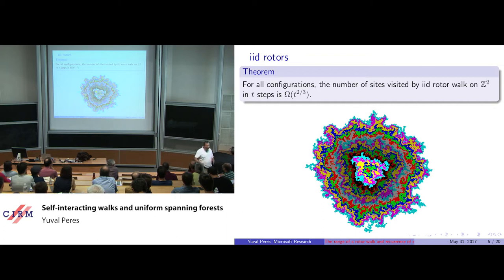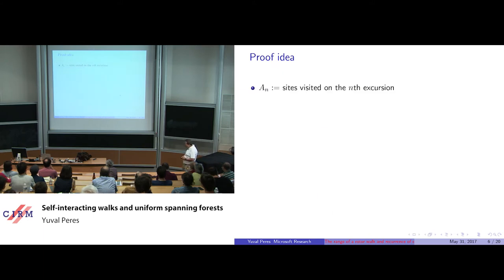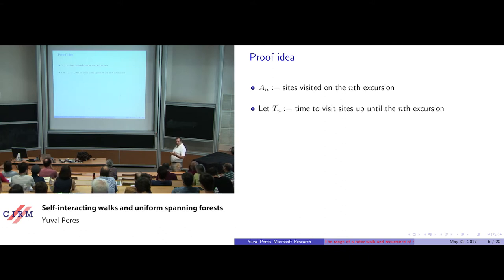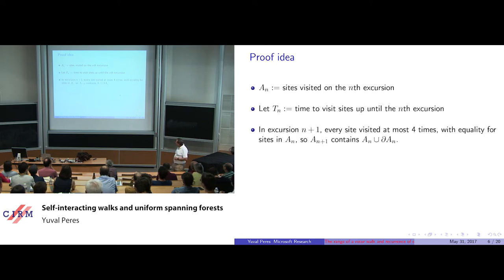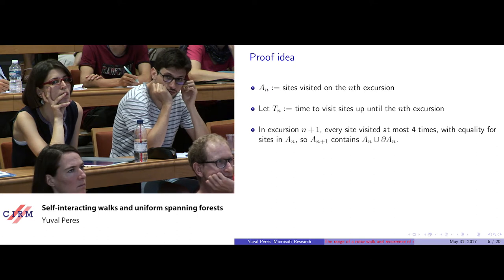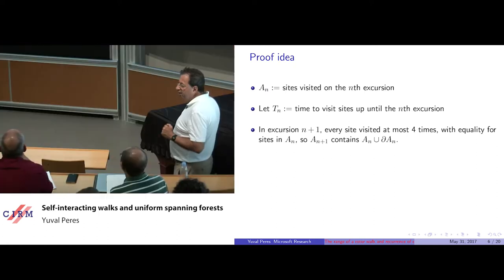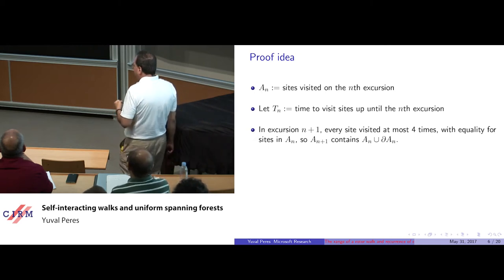Each excursion will cover the previous excursion and also the boundary of the previous excursion, so this walk has nice combinatorial properties. If a_n is the set of sites visited in the nth excursion and t_n is the total time of all the first n excursions, then in excursion n+1 every site is visited at most four times. The sites in a_n covered by the previous excursion are all visited, and each of them is visited four times.